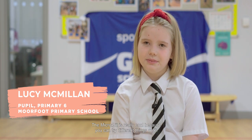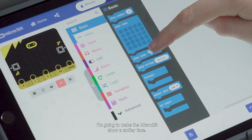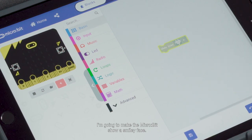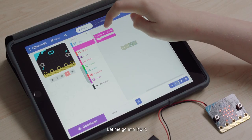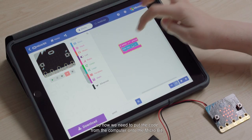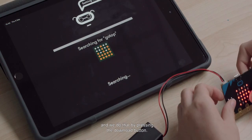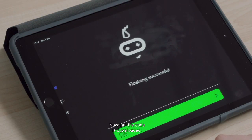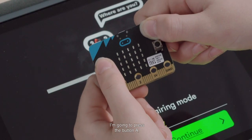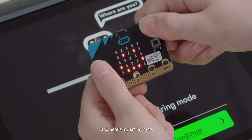The micro:bit is really cool because you can try different things on it. I'm going to make the micro:bit show a smiley face. Then we go into input. Now we need to put the code from the computer onto the micro:bit, and we do that by pressing the download button. Now that the code is downloaded, I'm going to press button A and here is my smiley face.